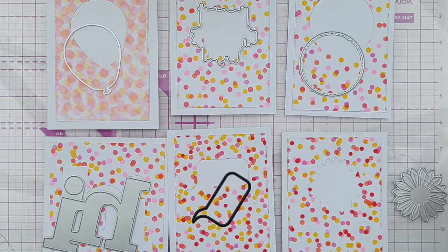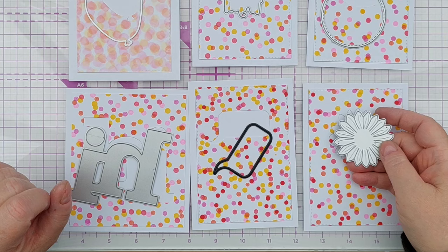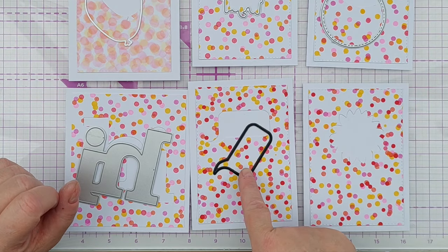I did do some more with the other scraps that I put dots on. For this one I used a flower die to cut the shape and a speech bubble on this one.